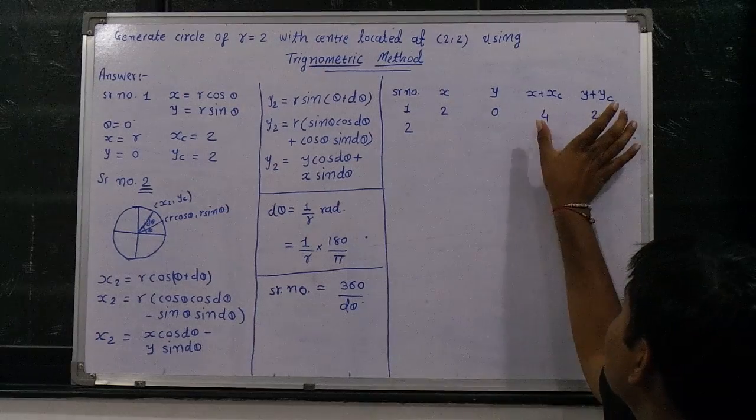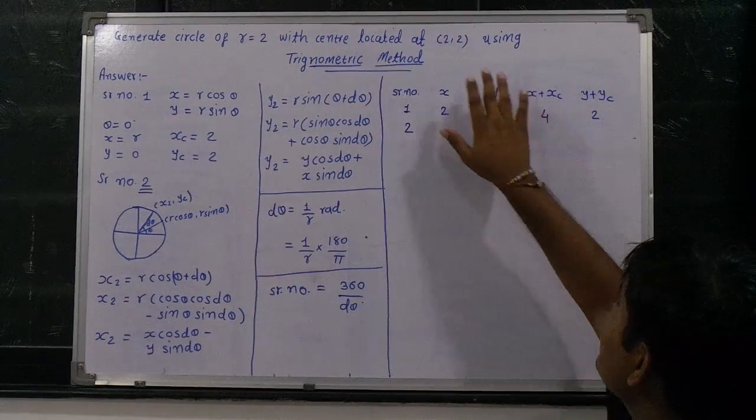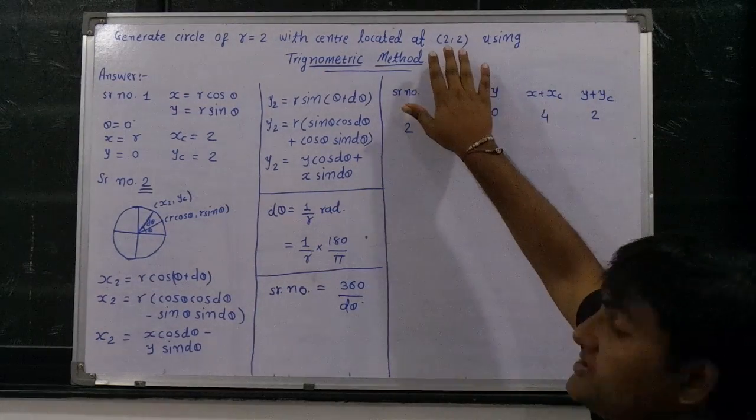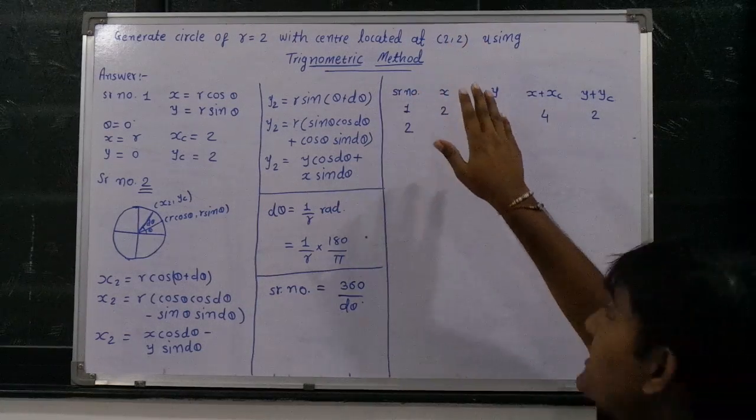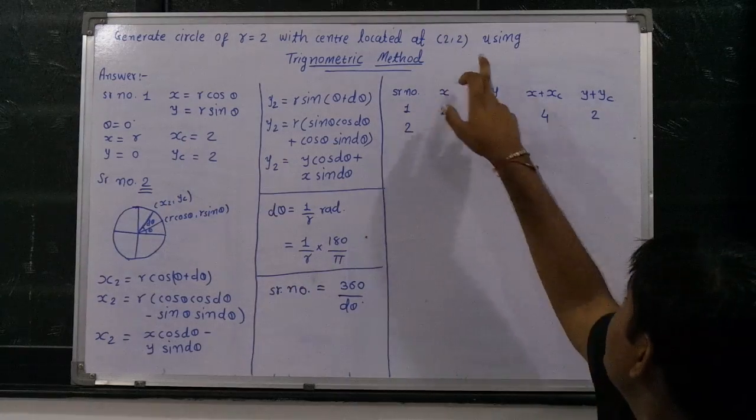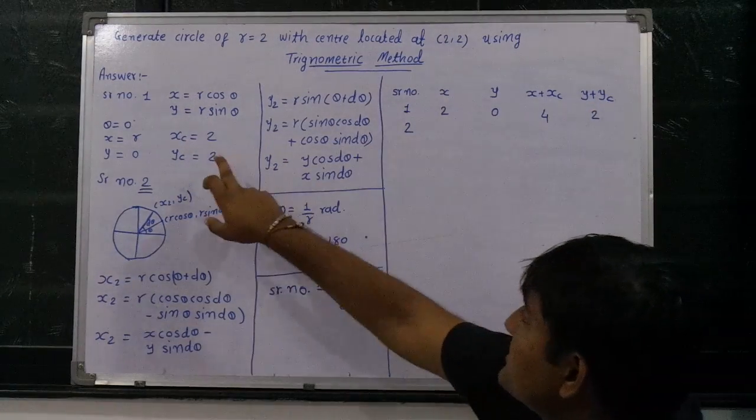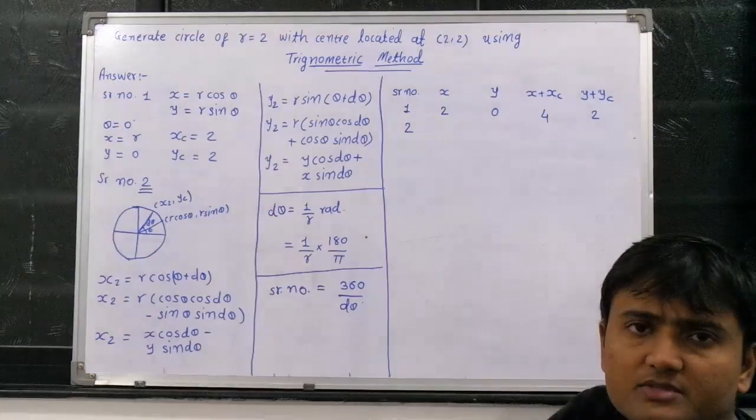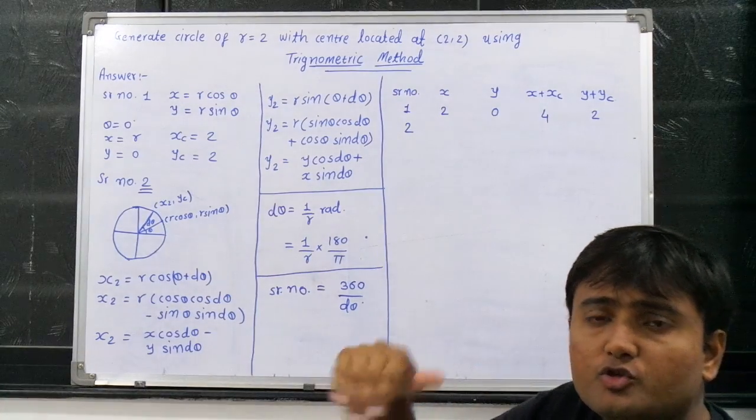Why are these columns required, x plus xc and y plus yc? Because the center is not at origin (0,0), it is at (2,2). That's why xc means 2 which is written here, and yc also means 2 which is written here. That is the shifting of the center from (0,0) to (2,2).